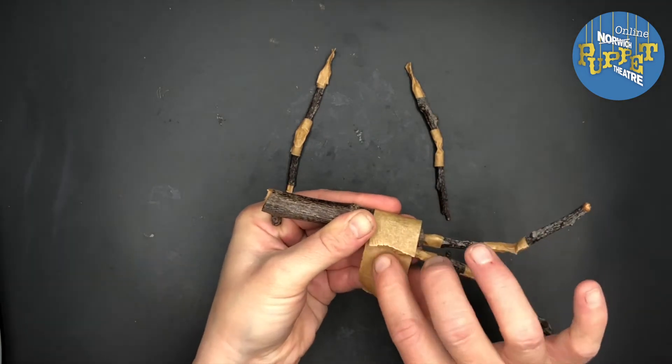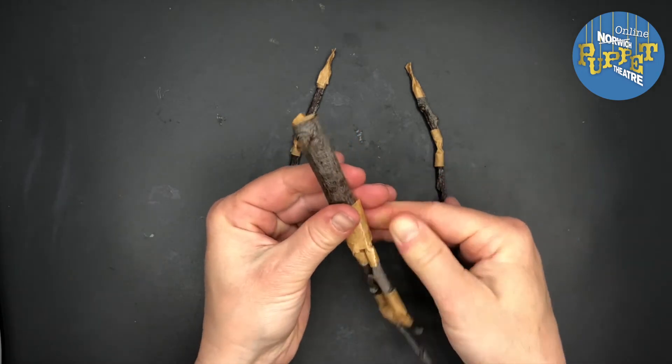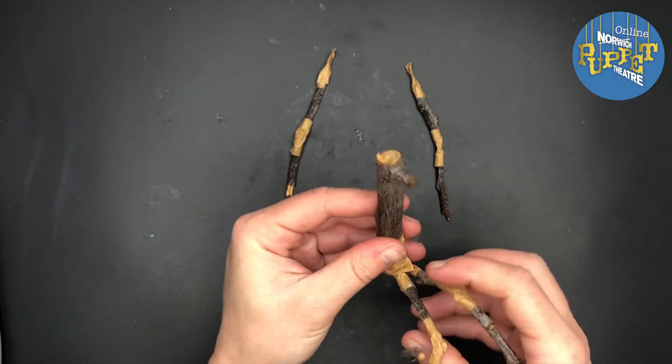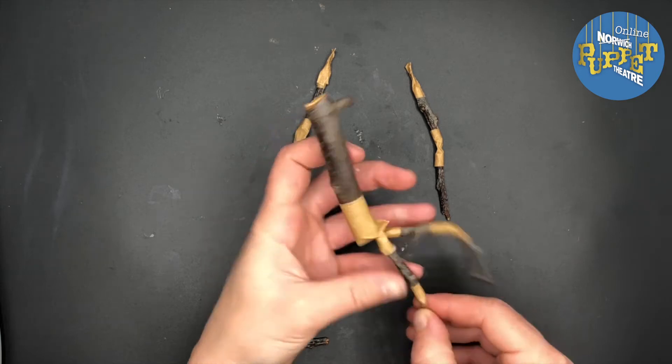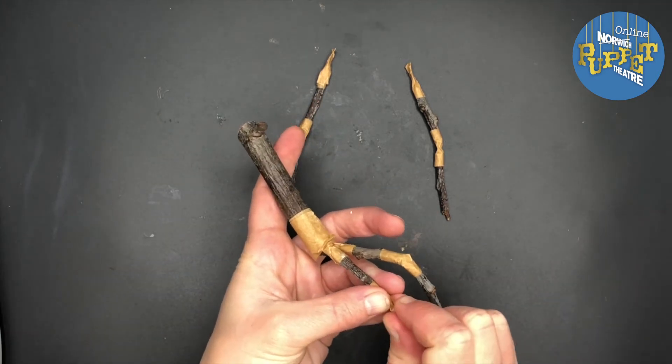And then I'm going to stick one end of my tape on and then wrap the rest of the tape around so it's really securely stuck onto the bottom of my puppet body.